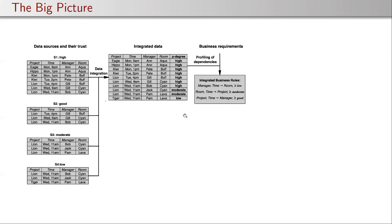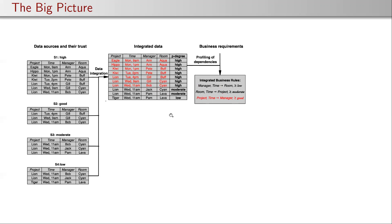We could have different business rules obtained by mining the relation. For example, we have the functional dependency that manager and time together determines room — this holds on all data independently of their possibility degree. But if we look only at at least moderately trusted data, then room and time determines project, and for at least good data we have these tuples here.